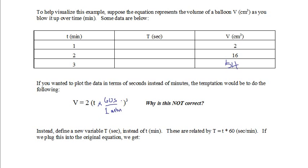The reason why is, well there are several reasons. The first one is, if your t equals 1 minute, which is also equal to 60 seconds, and you plug that into your equation, it's not going to give you the correct answer of v equals 2 centimeters cubed.